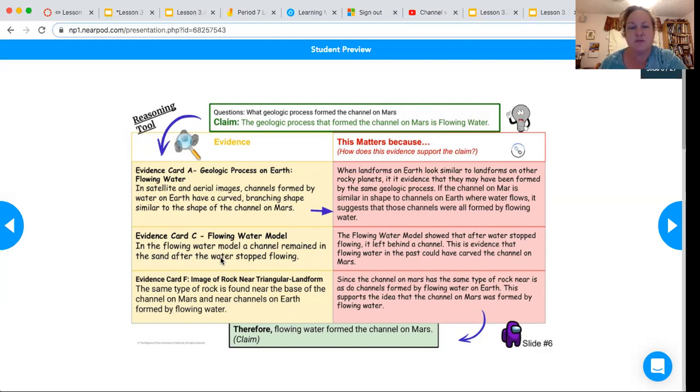So those are two pieces of evidence. And the last piece of evidence that we worked with last class was evidence card F, which is the image of the rock near the triangular landform on the channel of Mars. The same type of rock is found near the base of the channel on Mars and near channels on Earth formed by flowing water.